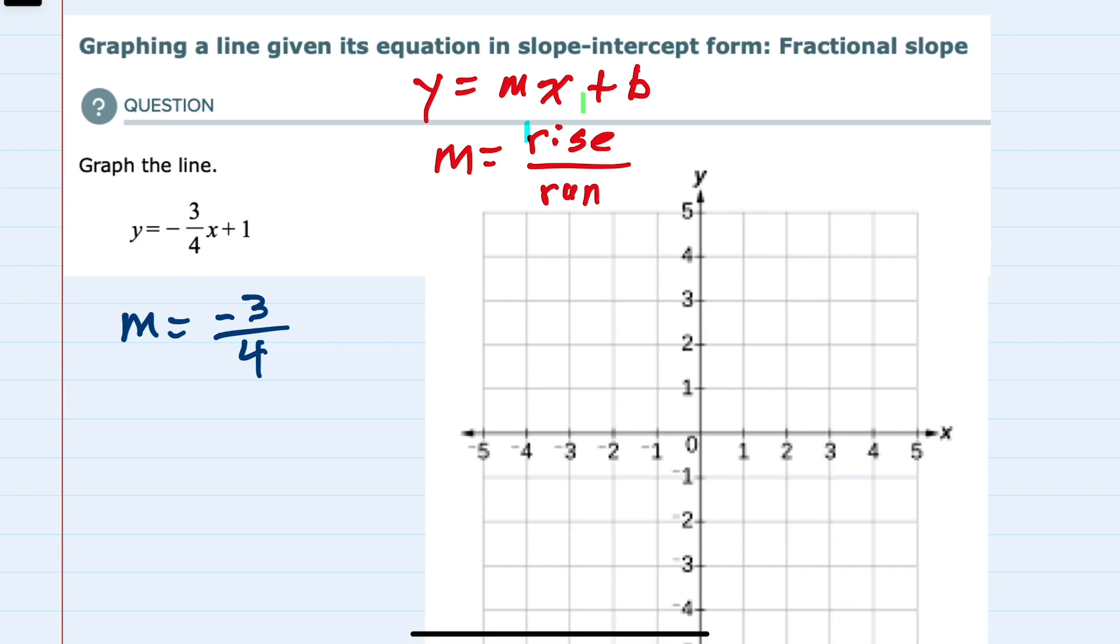And then the y-intercept, which is the plus b, here is plus one, so b is one.